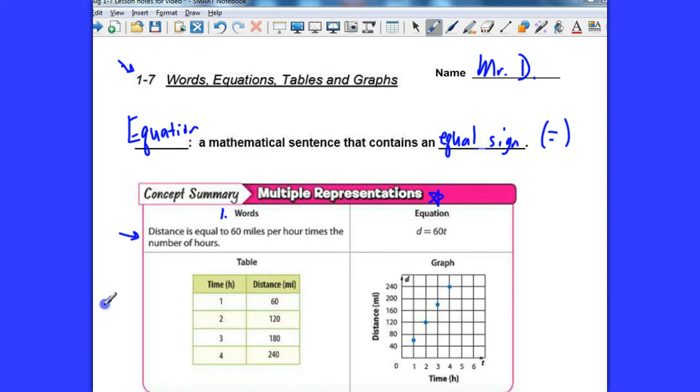So they gave us a problem right here that a distance is equal to 60 miles per hour times the number of hours. So if somebody is driving a car, their average speed is 60 miles per hour. If you want to know how far they've gone over a period of time, that's the problem that we're working with here. So the first thing, the words, that's just a description in words.